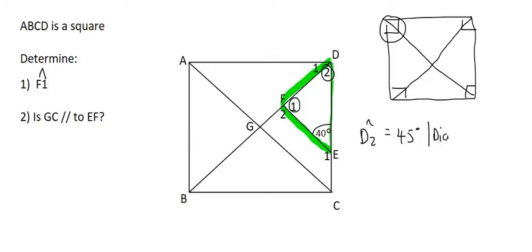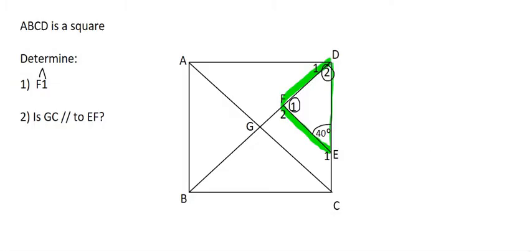That's because the diagonals of a square bisect the corner angles, and we can easily find F1 because we know that in that triangle all angles should add up to 180. So angle F1 equals 180 minus D2, which is 45, minus the 40 degrees.